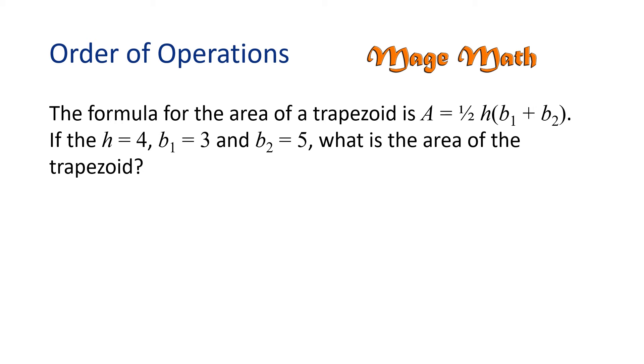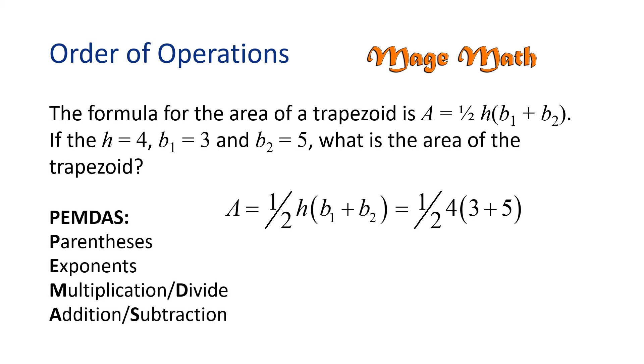First, let's substitute the numbers for each variable into the formula. This gives us A equals 1 half times 4 times the quantity of 3 plus 5. Now, we're going to apply the order of operations by starting out within the parentheses. 3 plus 5 is 8.